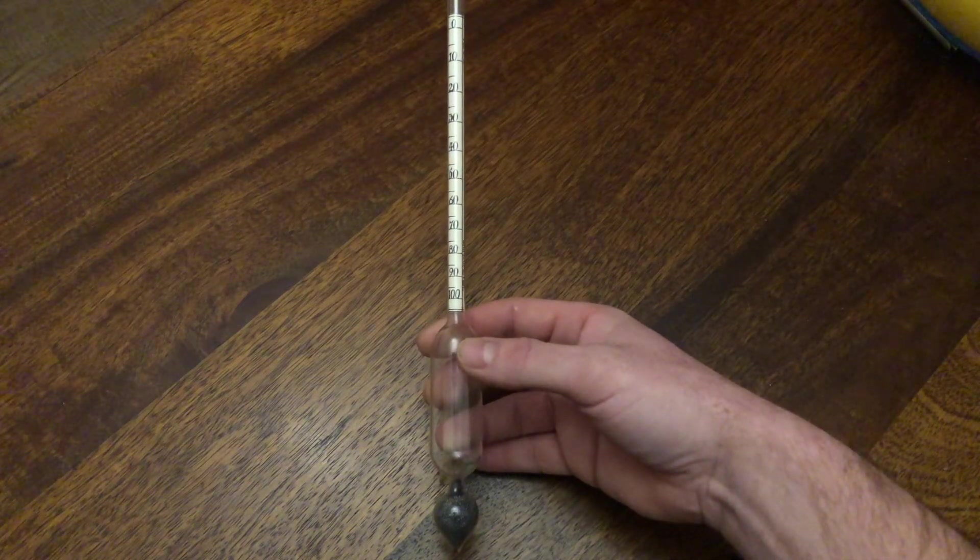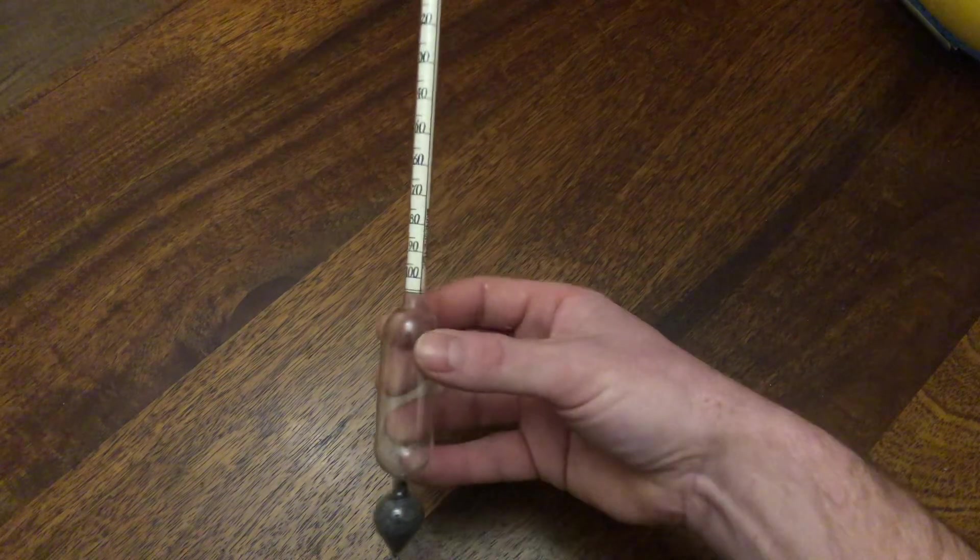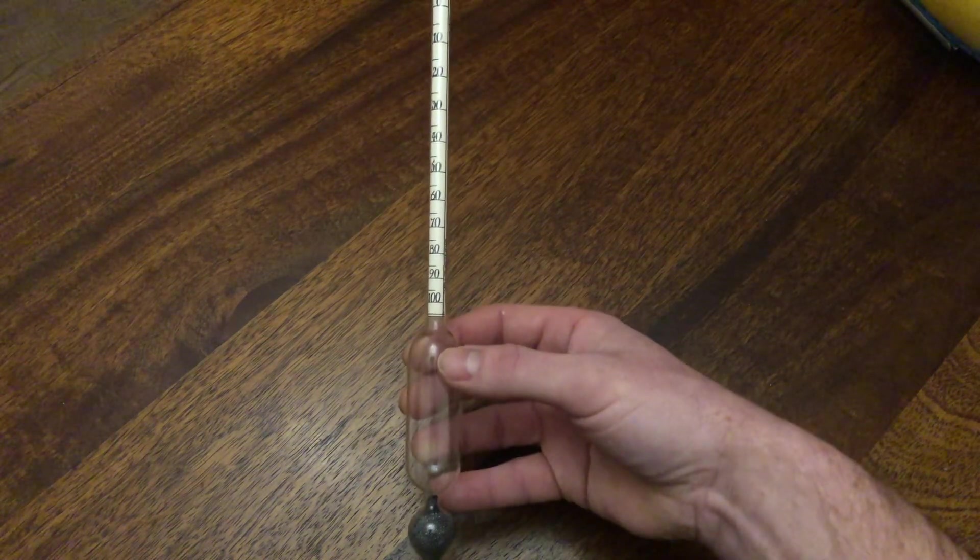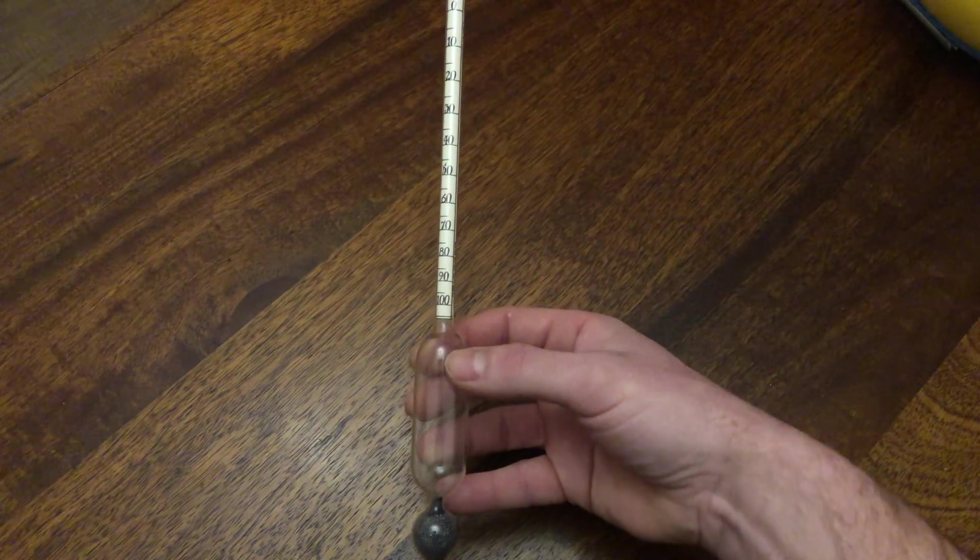If you want to make up brines for smoking fish, you really need to buy one of these, a brinometer. It's one of the few accurate ways of getting the correct salt solution.